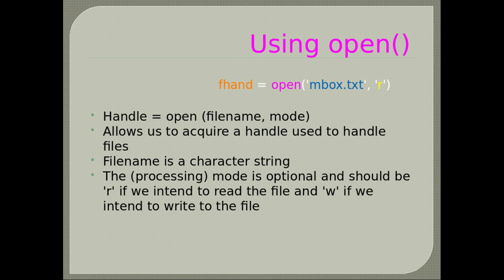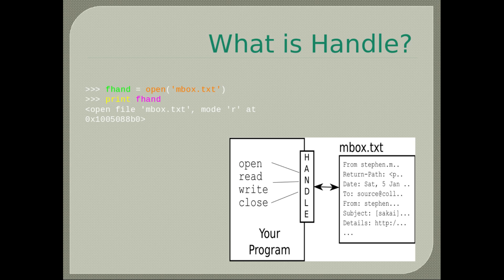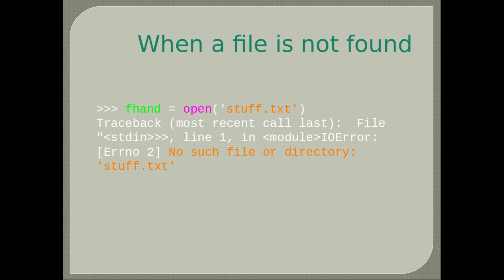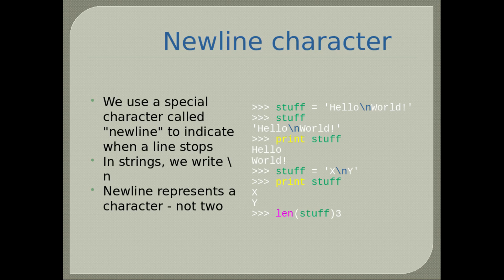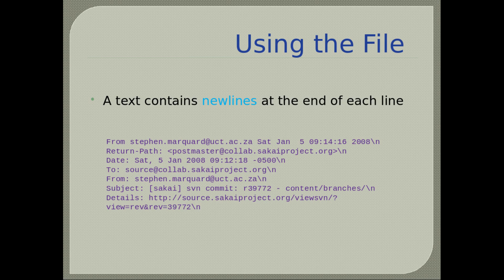Through the handle you choose what you want the program to do: open it, write to it, read from it, or close it. When a file is not found, it will give you an IOError stating the file was not found. We use a special character named newline to indicate when a line stops — in strings we write \n. Newline represents one character, not two. A text file contains newlines at the end of each line.